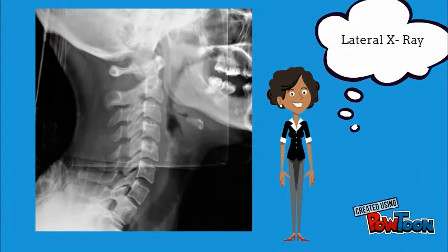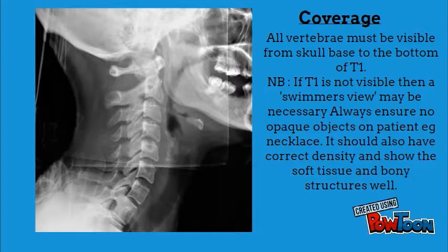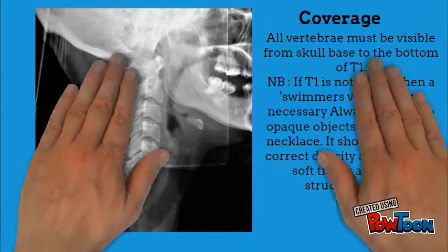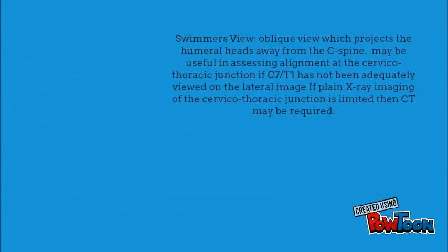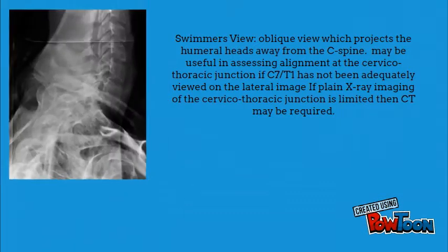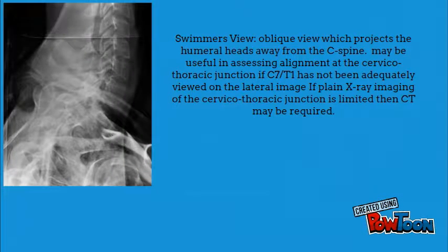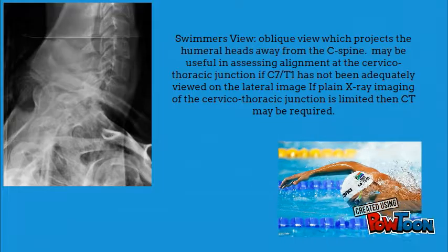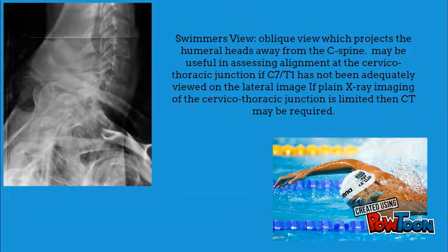All vertebrae must be visible, from the skull base to the bottom of T1. If T1 is not visible, then a swimmer's view may be necessary. A swimmer's view is an oblique view which projects the humeral head away from the C-spine.